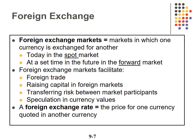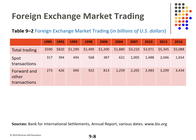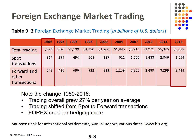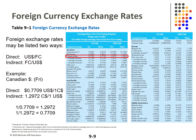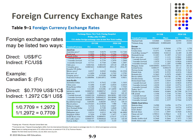A foreign exchange rate is the cost of one currency in another. Table 9-2 shows foreign exchange market trading from 1989 to 2016 — trading grew on average 27% per year. Note the shift from spot to forward. Foreign exchange rates are quoted in two ways: direct and indirect. Direct is quoted as the US dollar to the foreign currency; indirect is the opposite — foreign currency to the US dollar. For example, the Canadian dollar: the direct rate is $0.7709 US to one Canadian dollar, and the indirect rate is 1.2972 Canadian dollars to one US dollar. Note that one is the inverse of the other.